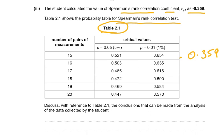The value here is minus 0.359. Now what is the critical value? Number of pairs is 17, so the critical value at 5% probability is 0.485. Your value of rs is less than the critical value of 0.485. So the null hypothesis is accepted, which means there is no significant correlation between the latitude and the number of bird species.